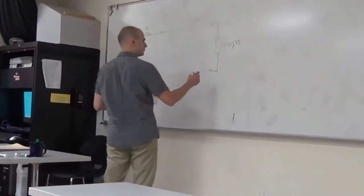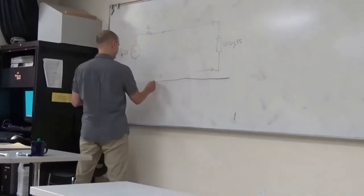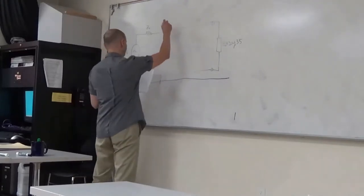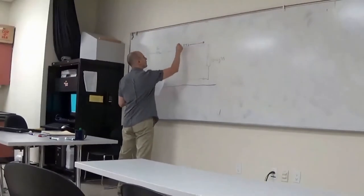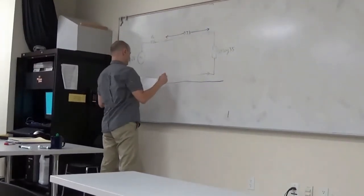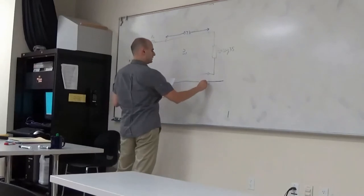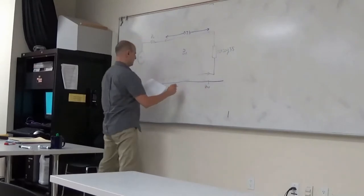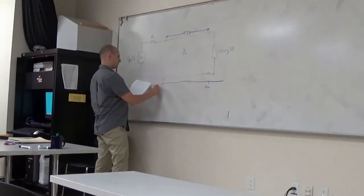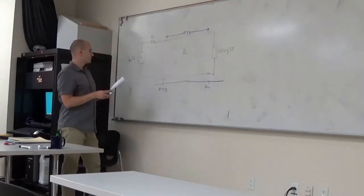We have a load of 20 minus j35, and then we have a transmission line section that is 0.7 lambda long. Using the Z-axis, the load is always equal to zero, and as we travel on the transmission line, Z gets negative, so here we're at minus 0.7 lambda, and L gets positive, so L is equal to 0.7 lambda.